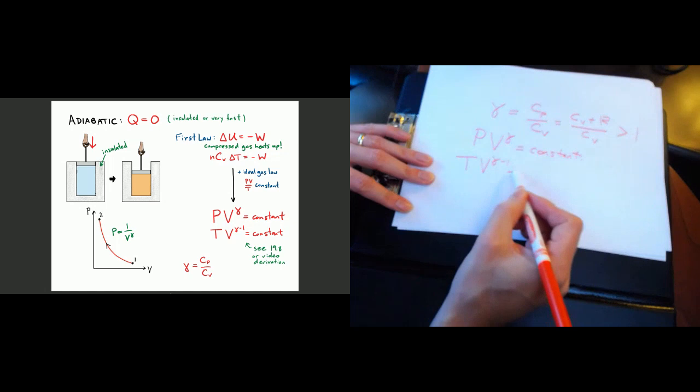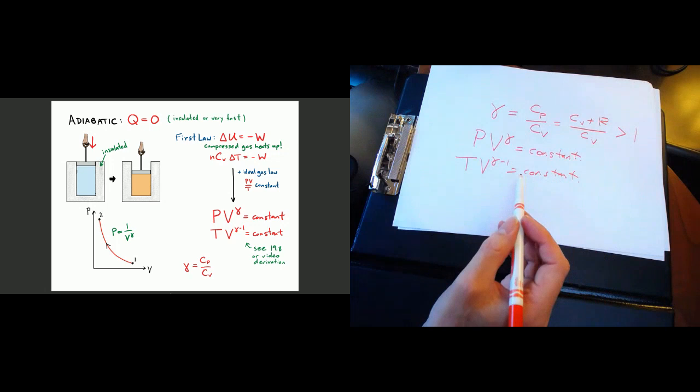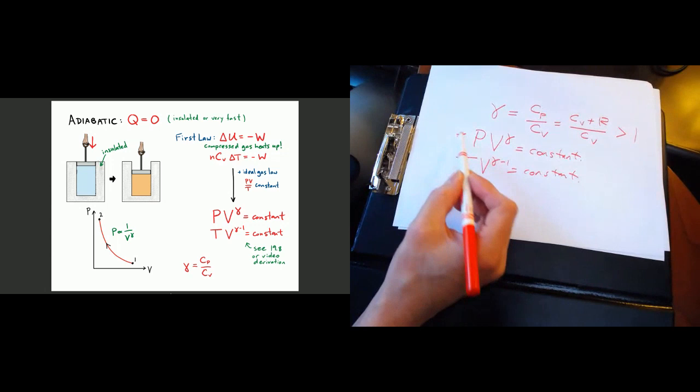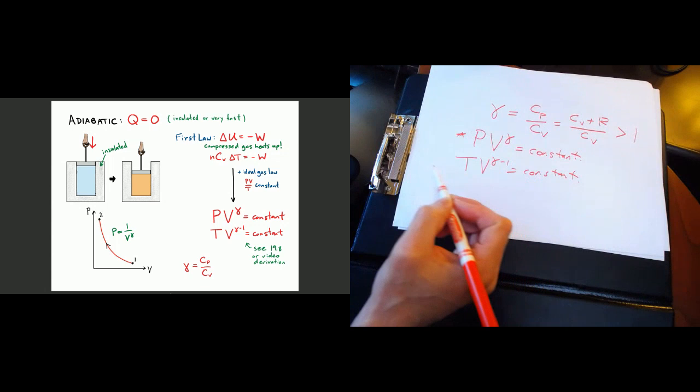So for example, if you know the initial volume, final volume, and initial pressure, you can use PV^γ = constant to predict the final pressure. If you know the initial volume, initial temperature, and final volume, you can use TV^(γ−1) = constant to predict the final temperature.